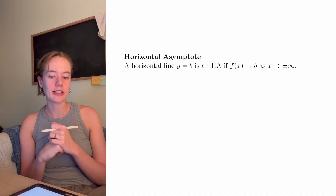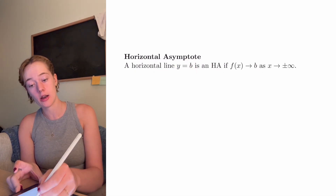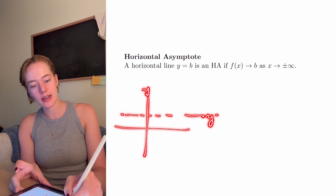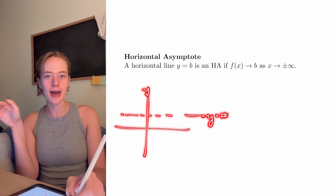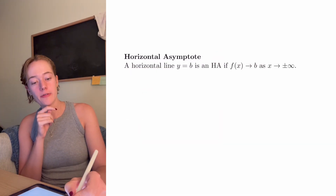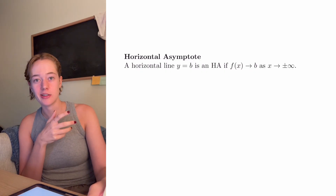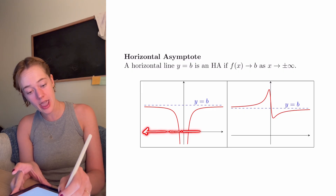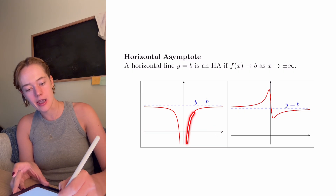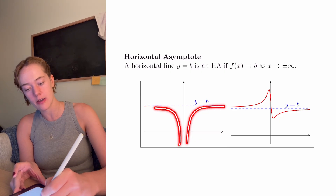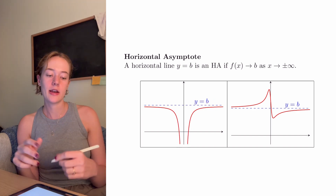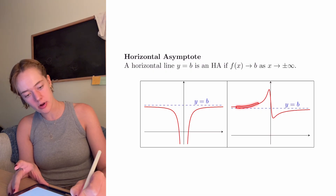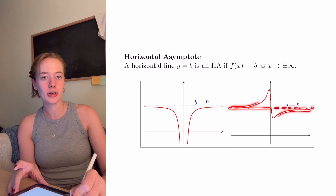Here's our definition for horizontal asymptotes. A horizontal line is going to look something like this — it goes through our y-axis at a certain point, so the equation is y is equal to whatever value it's passing. A horizontal line is in fact a horizontal asymptote if our function approaches b as x approaches either positive or negative infinity. On the left, as x goes towards negative infinity and positive infinity, our function approaches the y equals b value — it never touches or crosses it. A similar thing happens on the right.